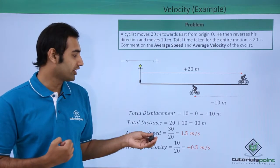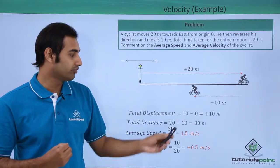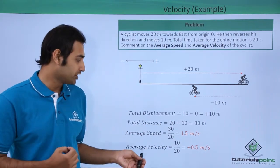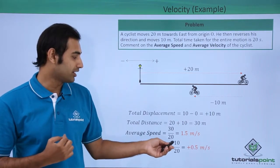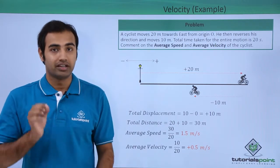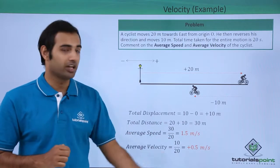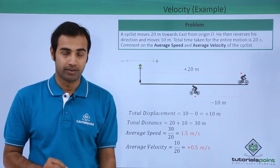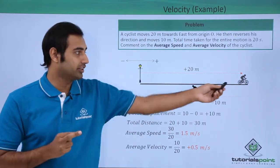Average speed is defined as total distance upon total time, so 30 upon 20 gives 1.5 meters per second. Average velocity is defined as total displacement upon total time, which is plus 10 upon 20. The answer comes out to be plus 0.5 meters per second. Remember, if the displacement was in the negative direction then average velocity would have been negative, because velocity is a vector quantity just like displacement.